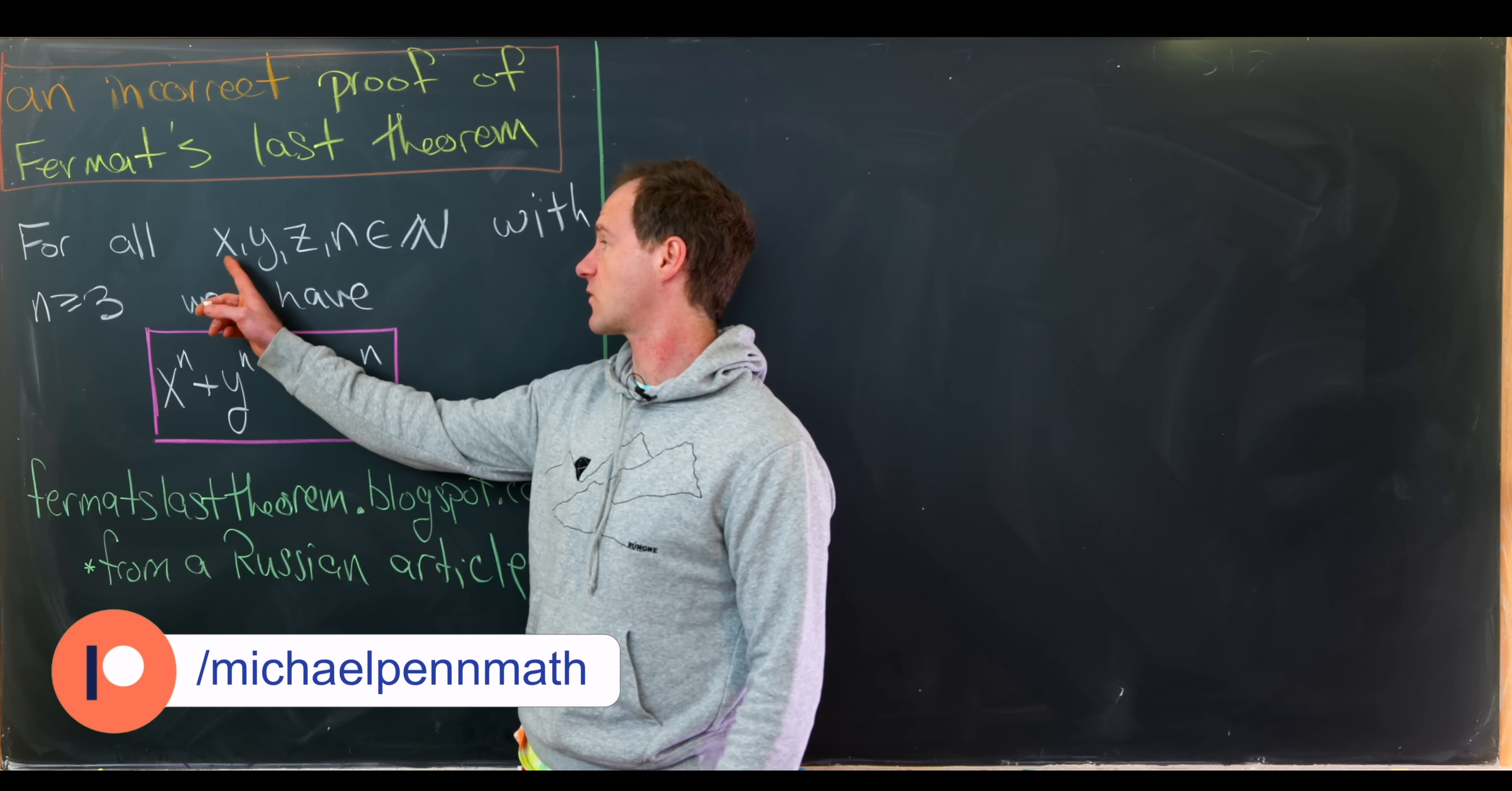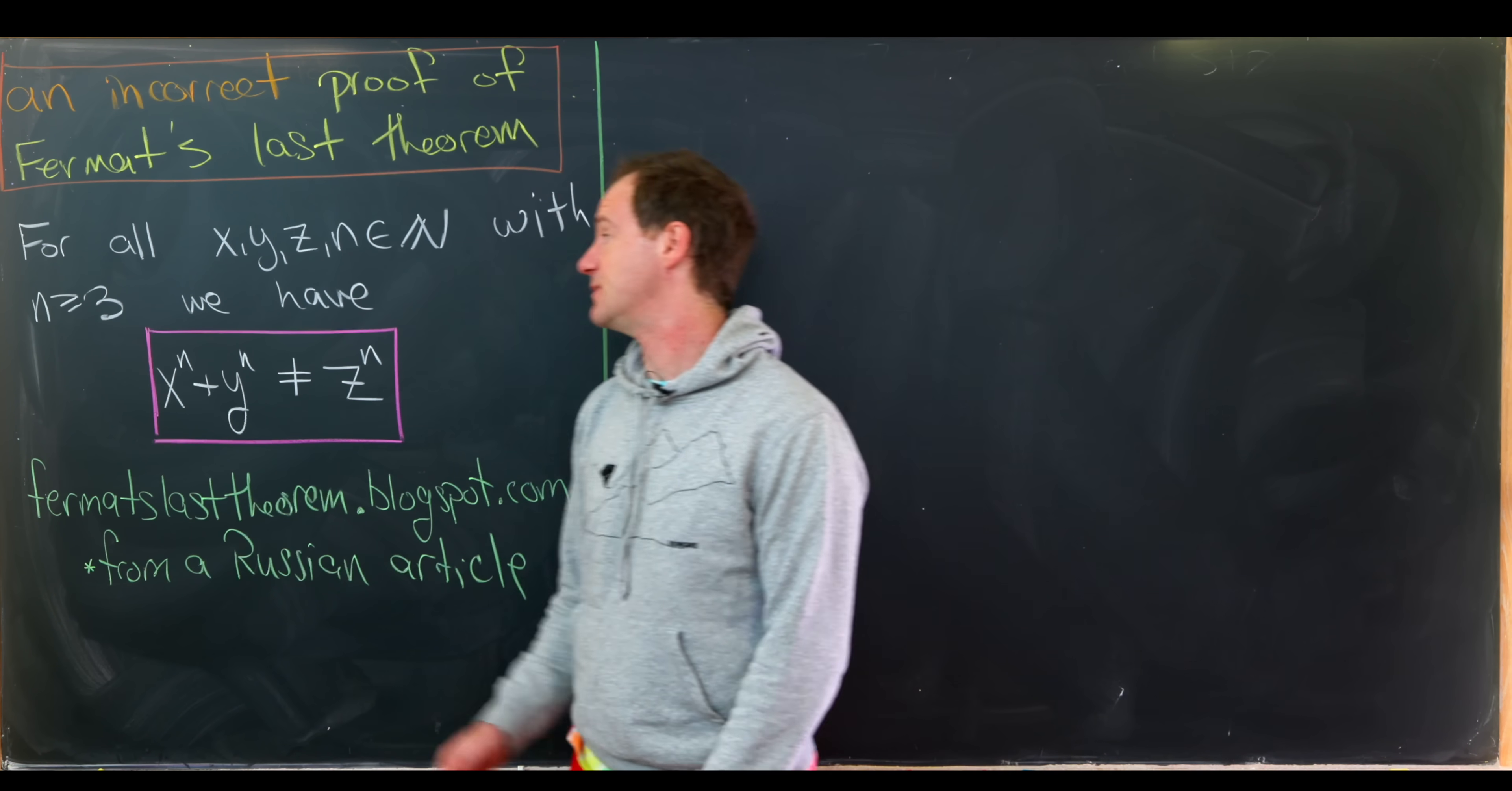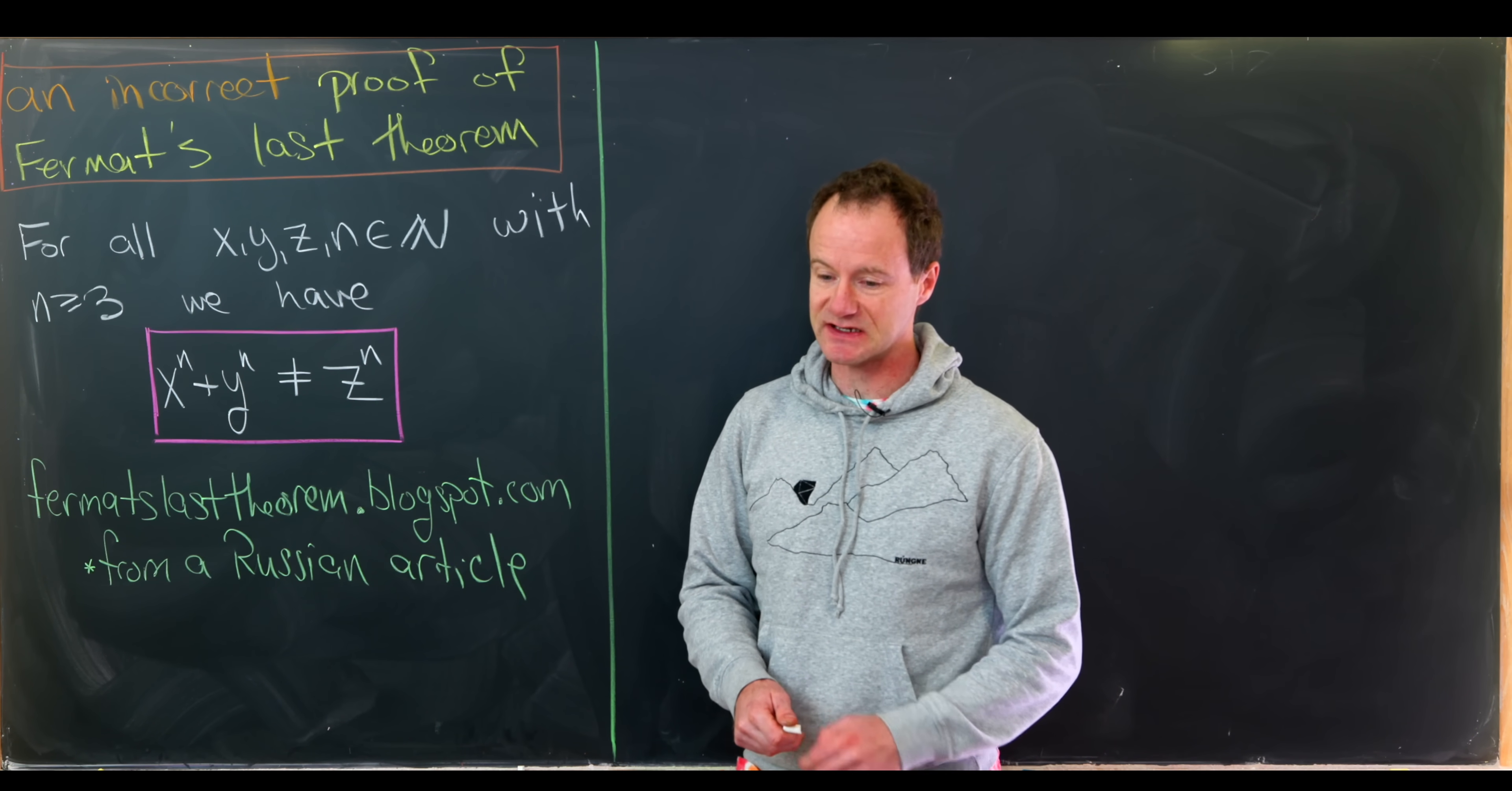It says for all x, y, z, and n, which are natural numbers, where n is bigger than or equal to 3, we have x to the n plus y to the n is not equal to z to the n.